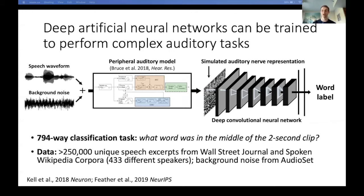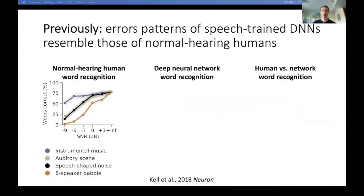We train these networks on millions of utterances from hundreds of different speakers using backpropagation and gradient descent. To make the task more difficult and realistic, the speech is embedded in background noise from YouTube soundtracks. We use this task because it's quite natural for humans to do. The plot on the left shows the results of humans doing this word recognition task.